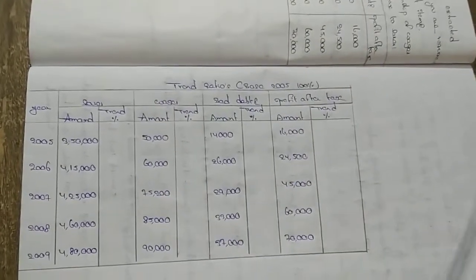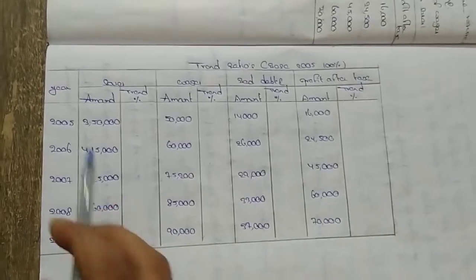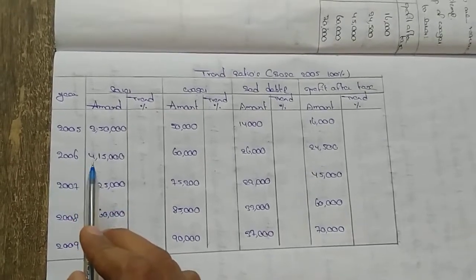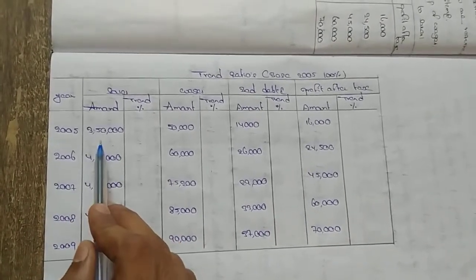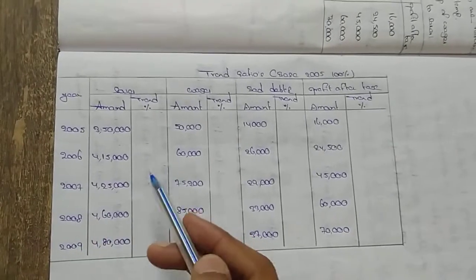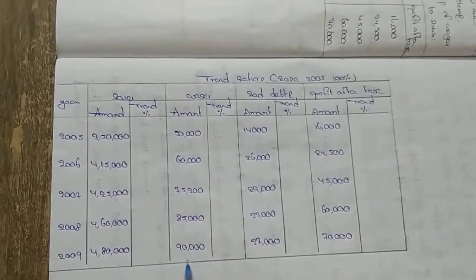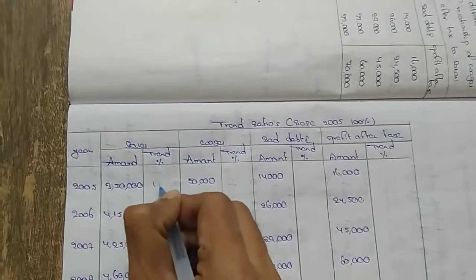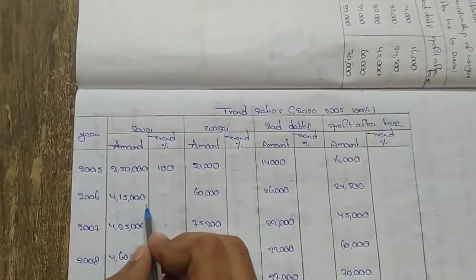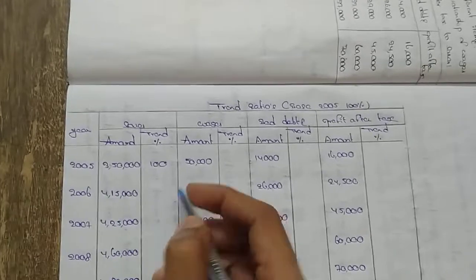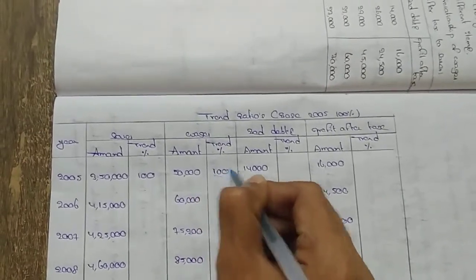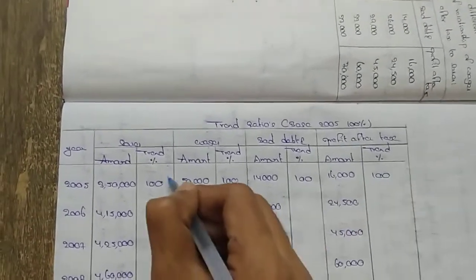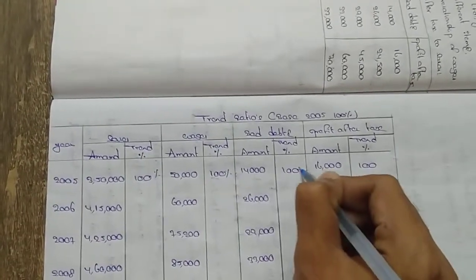For the trend ratio table: normally, for 2005, sales are 3 lakhs 50,000. For 2006, sales are 4 lakhs 15,000 — that is an increase from 3 lakhs 50,000. We take 2005 as the base year, so 2005 = 100%. The trend percentage is calculated relative to the base year 2005.